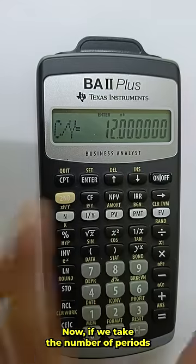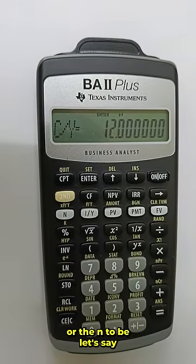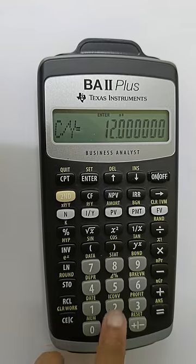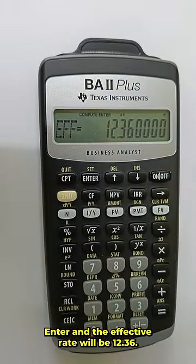Now if we take the number of periods or the n to be, let's say, half yearly compounding, in that case we will take it as 2, enter, and the effective rate will be 12.36.